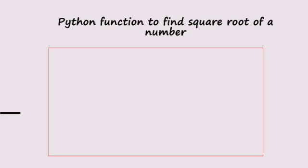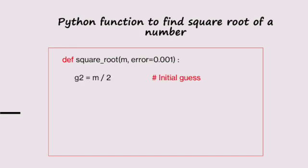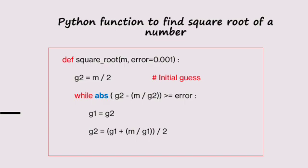Now let's see the Python function. def square_root(m, error=0.001): m is the variable for which we want to find the square root, and error is the fixed error value. g2 equals m divided by 2 as initial guess. Then while abs(g2 minus m divided by g2) is greater than or equal to error, we assign g2 to g1, calculate g2 equals g1 plus m divided by g1, divided by 2. Once the loop exits, we return g2. So g2 will be the square root of m.